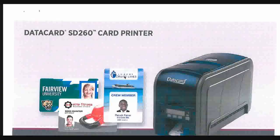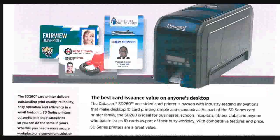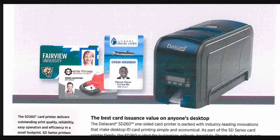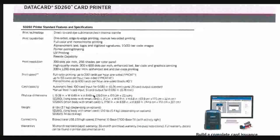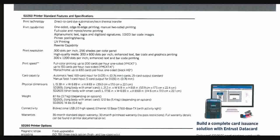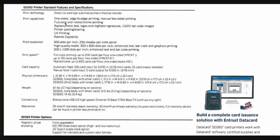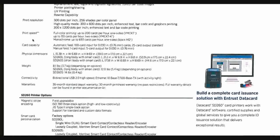We also have a card printer. It is not just used to assign an ID to the card — it can also print an image or a specific design on the card as requested by the client. Printing technologies include direct-to-card, sublimation, and thermal transfer. Print capabilities include edge-to-edge and two-sided printing, with a resolution of 300 dots per inch and a print speed of up to 200 cards per hour for one side or 155 cards per hour for two sides.